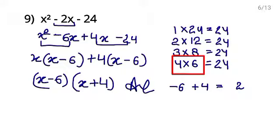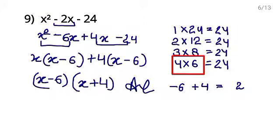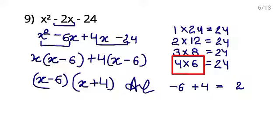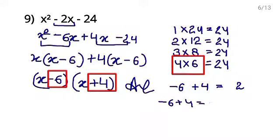You can check your answer: x times x gives x square (first term); 6 times 4 is 24 with plus times minus giving minus 24 (last term); and minus 6 plus 4 gives minus 2 which is the middle term coefficient. Your answer is correct.